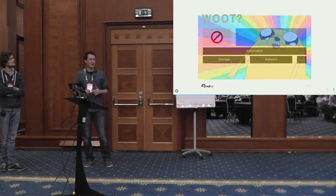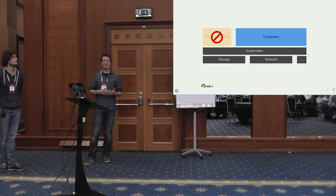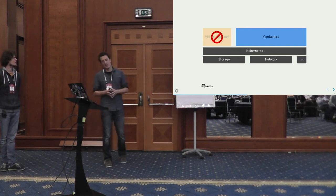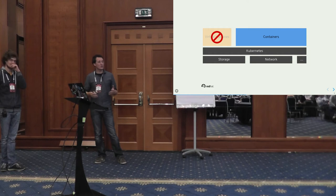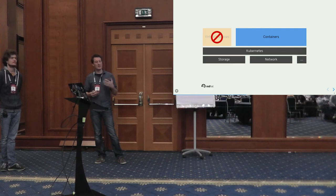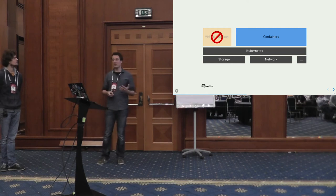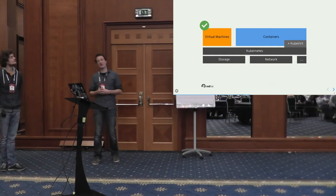Our orchestrator and management layer is Kubernetes. Kubernetes has emerged as the orchestrator for containers — there are others like Mesos and Docker Swarm, but Kubernetes allows you to use your cluster resources: storage and network. Today Kubernetes allows you to use those resources with containers, but it doesn't allow you to run virtual machines. So, simply, you add KubeVirt to that mix and you're able to run virtual machines on that same infrastructure through the same API.